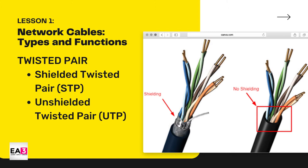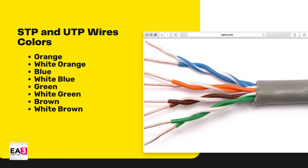It is important to identify the different network cables because it serves as your springboard in having a good network. Every cable has its own function, meaning you only use a specific cable in a given situation. The twisted pair, which we discussed in Week 2, has two types: the shielded twisted pair or STP, and the unshielded twisted pair or UTP. They are both made of four pairs of wires that are color coded: orange, white-orange, blue, white-blue, green, white-green, brown, and white-brown.